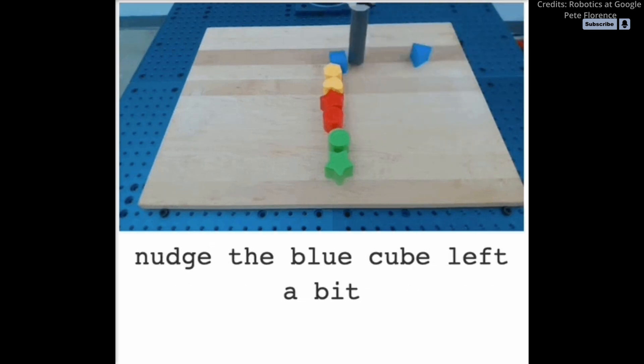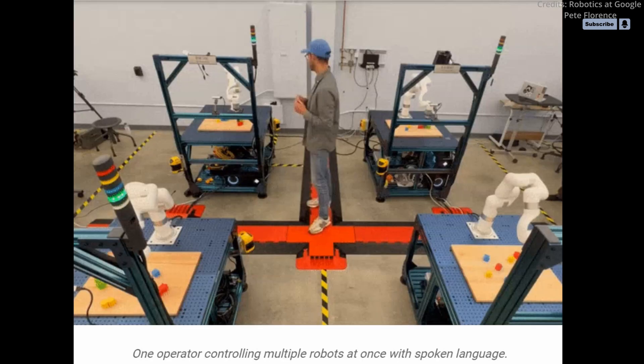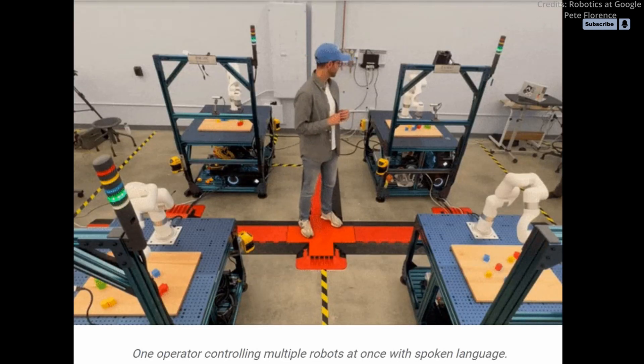All data, including failure data, is labeled with natural language text. This is done by annotators who watch long videos of the robots and use free-form language to describe the behaviors they see.